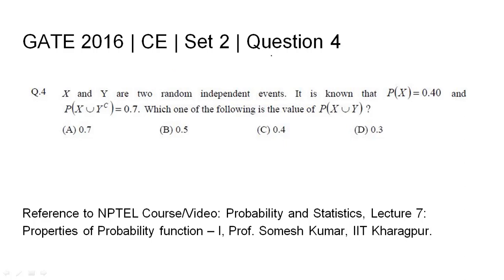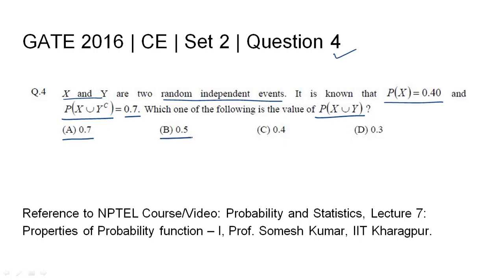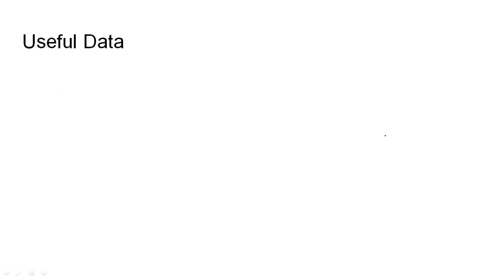GATE 2016 civil engineering set 2, question 4. X and Y are two random independent events. It is known that the probability of X is 0.4 and the probability of X union Y complement is 0.7. Which one of the following is the value of P(X union Y)? Four options are given: A) 0.7, B) 0.5, C) 0.4, and D) 0.3.